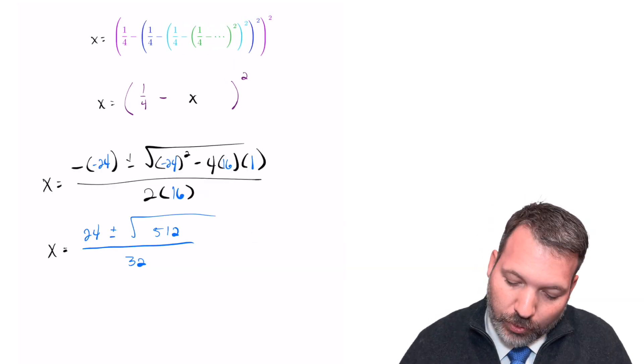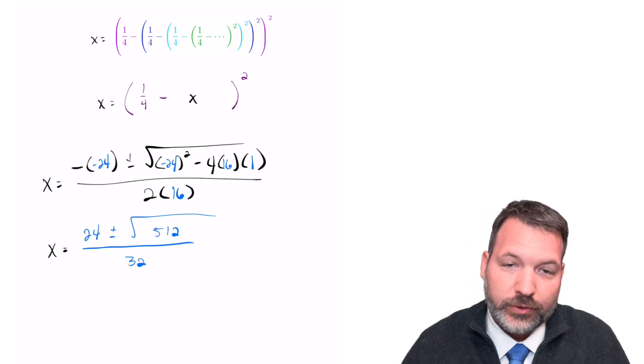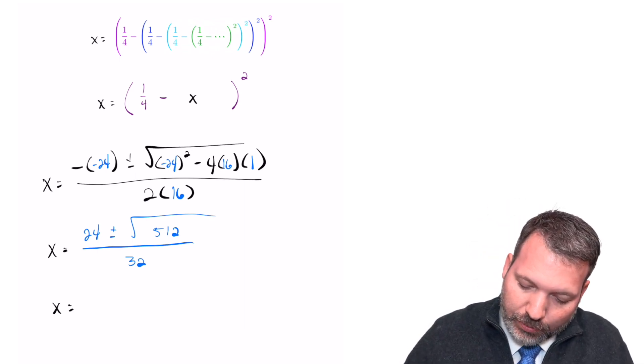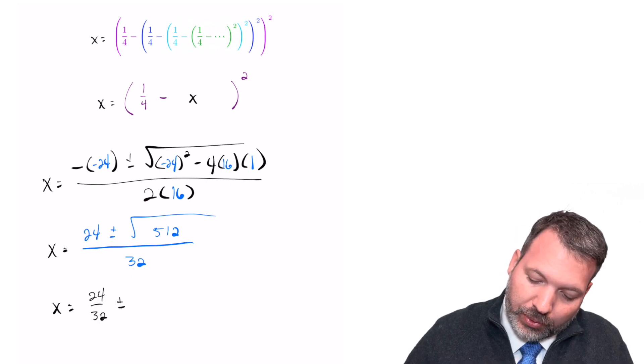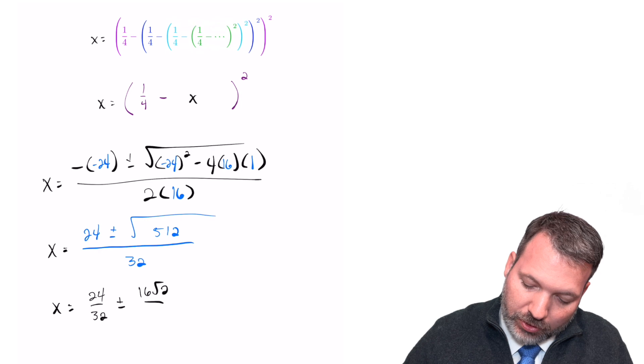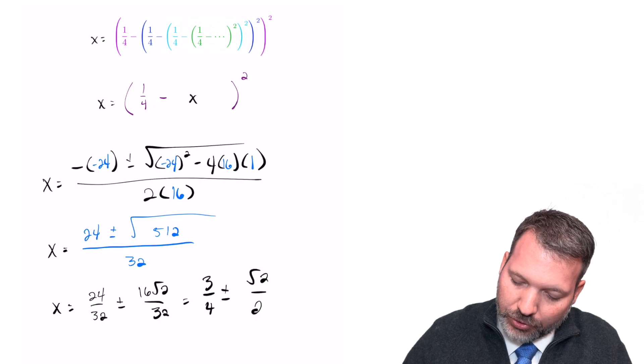After a little simplification, we can turn this into x equals 24 plus or minus the square root of 512 divided by 32. And even further, we can simplify that into x equals 24 over 32 plus or minus 16 root 2 over 32, which finally gets us back to three-fourths plus or minus the square root of 2 over 2.